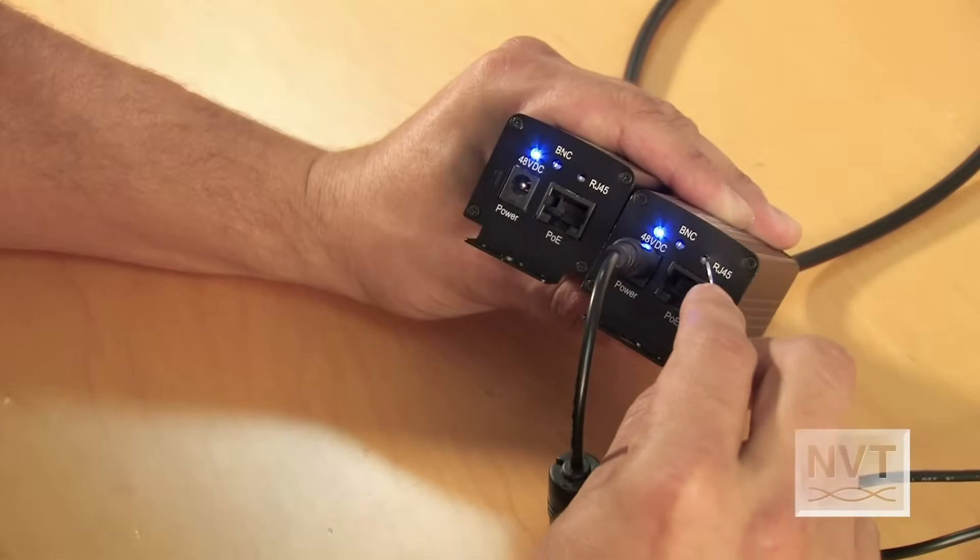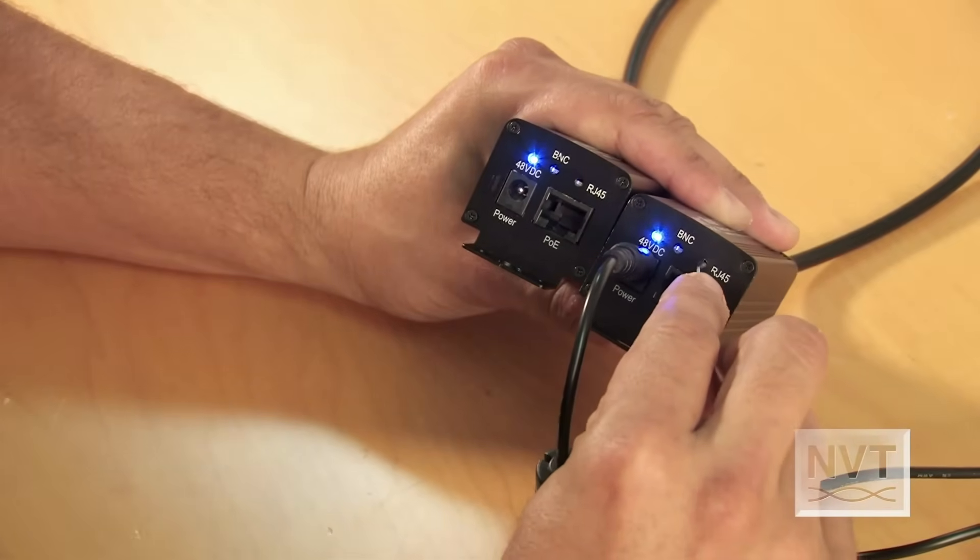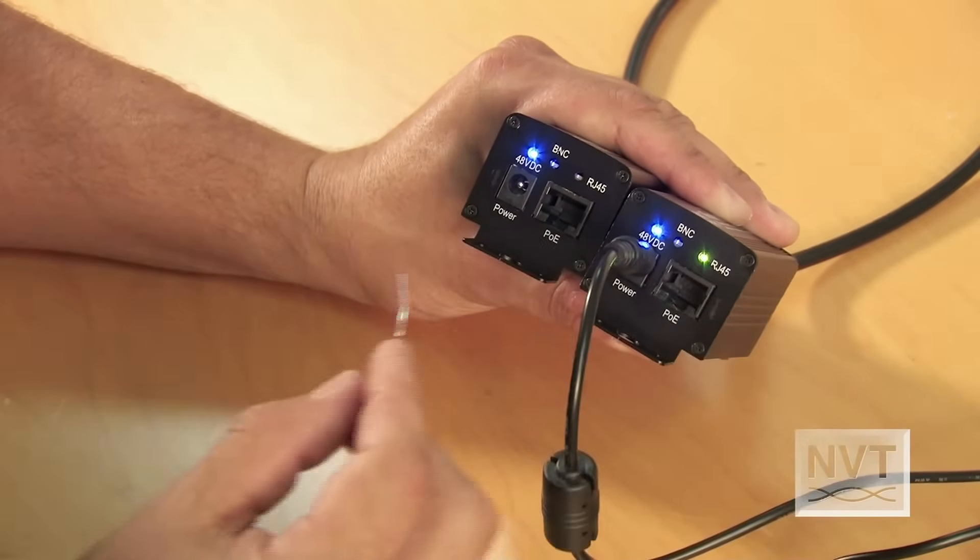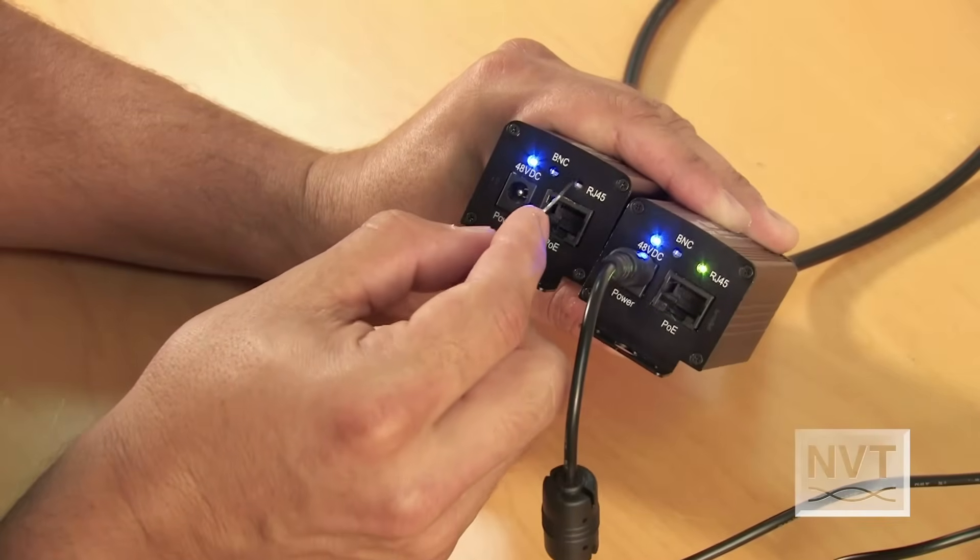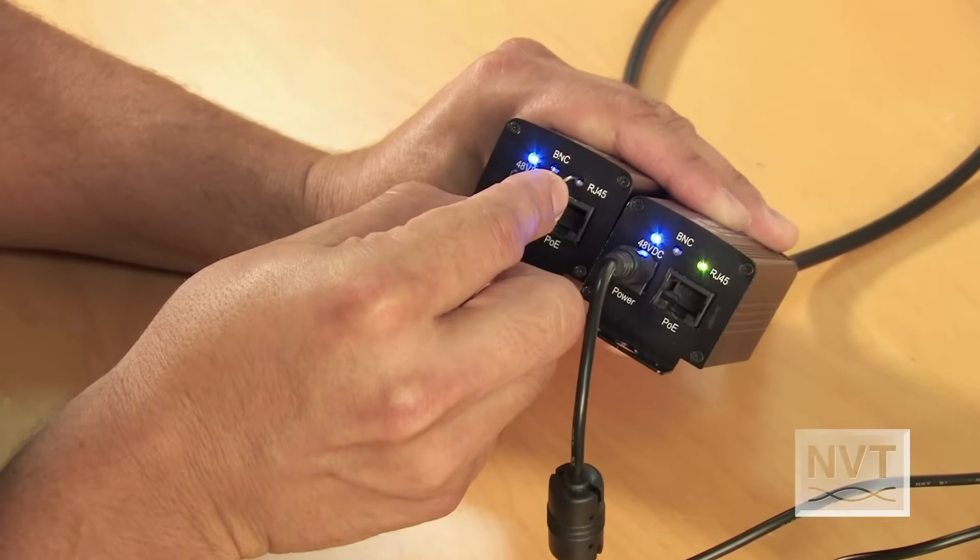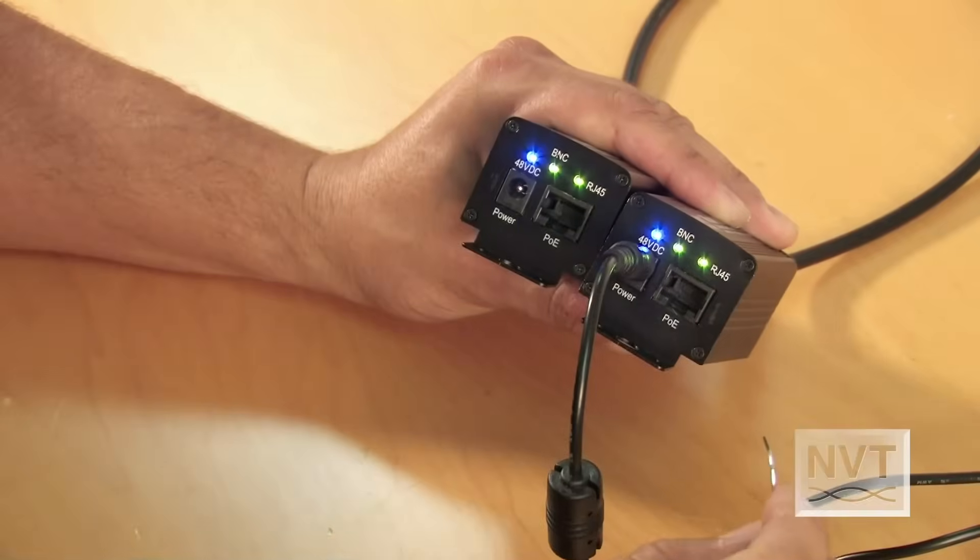I'm going to start with the one on the right. One, two, three. The RJ45 light blinks. I'm going to go to my second transceiver. One, two, three. It blinks. They're in join mode right now.